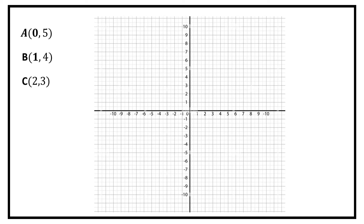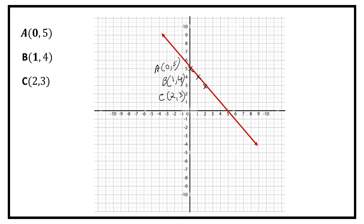Now we have the graph sheet and the values for x and y for the first equation. Let us plot the points: A(0, 5), B(1, 4), and C(2, 3). Now let us join these points by a straight line. This line represents the equation x plus y is equal to 5.